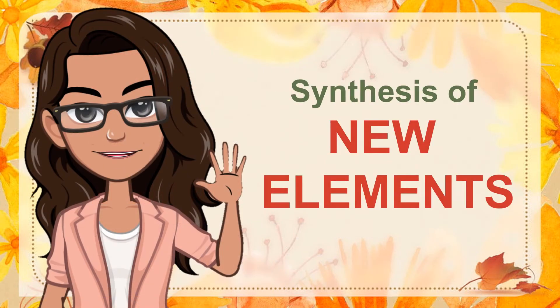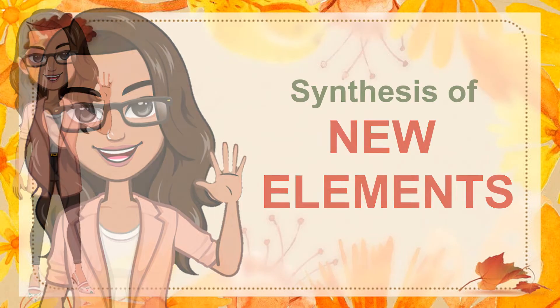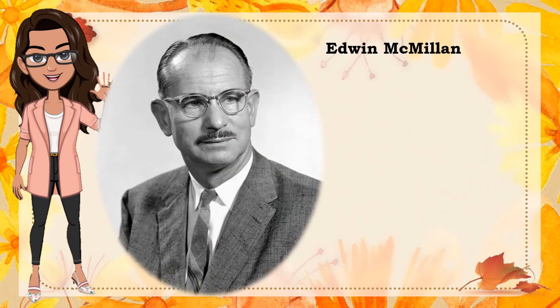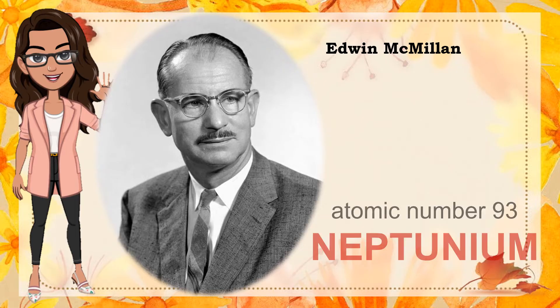Moving on: synthesis of new elements. In the 1930s, the heaviest element known was uranium, with atomic number 92. Early in 1940, Edwin McMillan proved that an element having atomic number 93 could be created. He used a particle accelerator to bombard uranium with neutrons and created an element with atomic number 93, which he named neptunium.